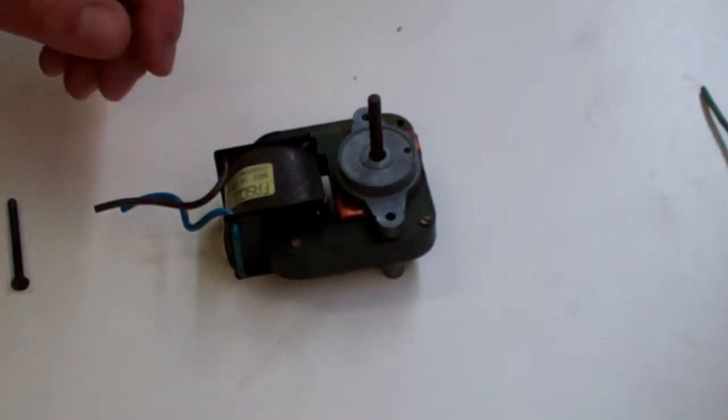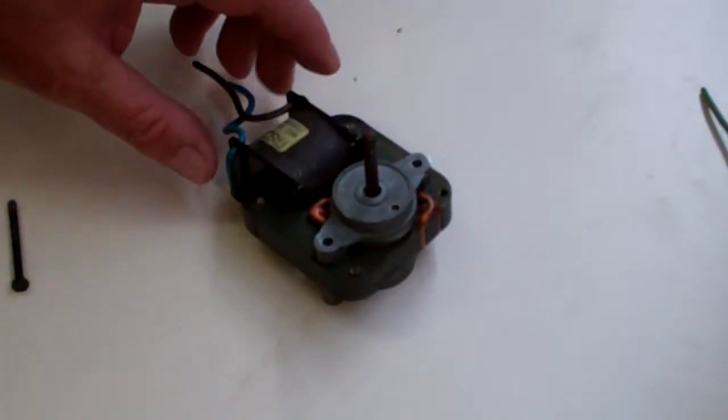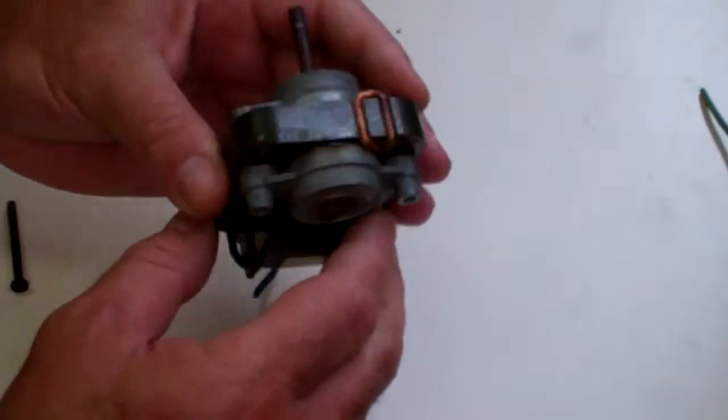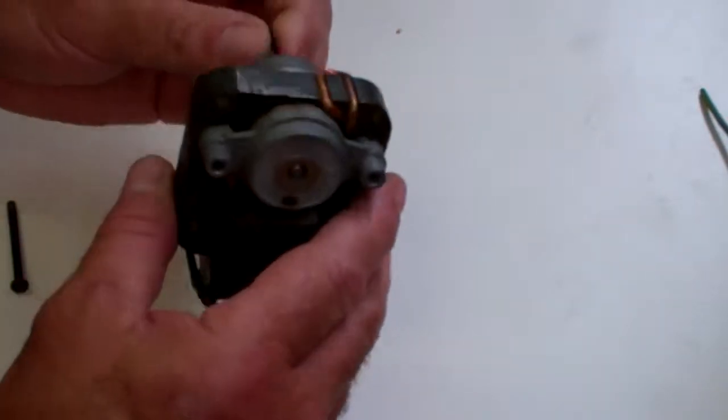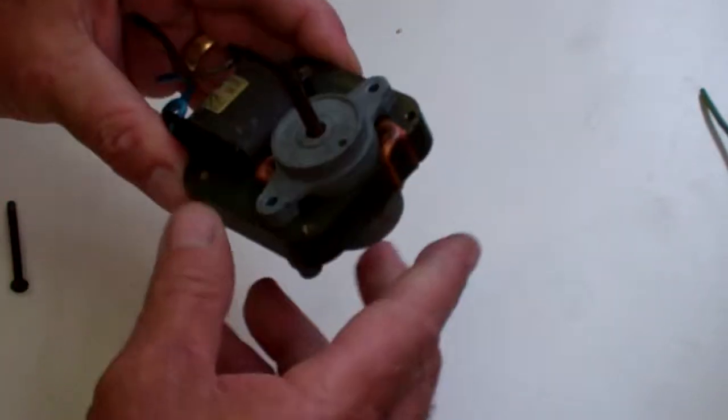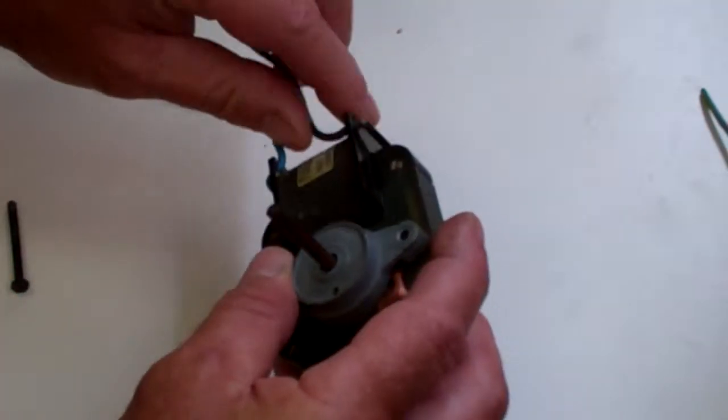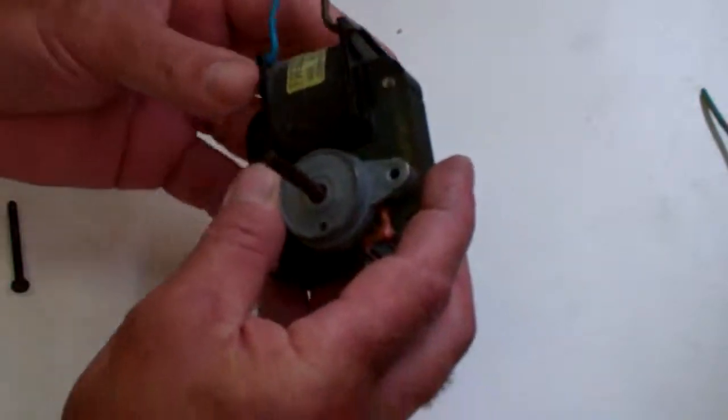For today's lesson we're looking at the shaded pole fan motor or pump. They use them for pumps and fan motors. Very low starting torque motors, they haven't got a lot of power. They're mainly used in commercial refrigeration, air conditioning, and domestic refrigeration air conditioning.